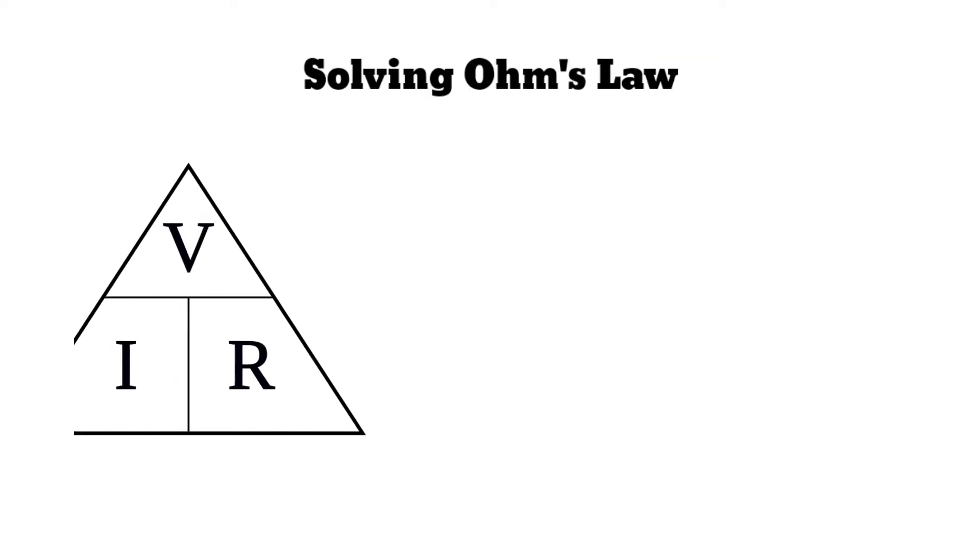Solving Ohm's Law. This triangle guides you to find the missing values for Ohm's Law. If you are looking for the voltage, cover the V on the triangle, leaving current I multiply resistance R equals V or voltage.